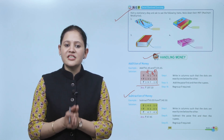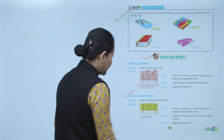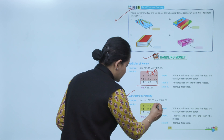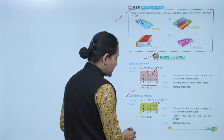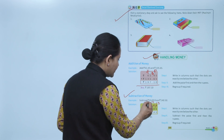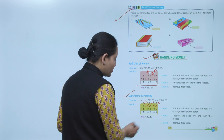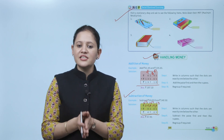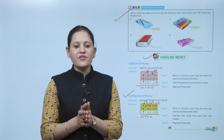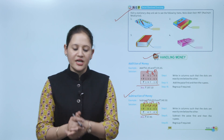Next is subtraction of money. Subtract rupees 93.05 from rupees 140.50. Starting from paisa: 10 minus 5 is 5; 4 minus 0 is 4; put the decimal; 10 minus 3 is 7; 13 minus 9 is 4. So the answer is rupees 47.45. Steps: write in columns with dots exactly one below the other, subtract paisa first then rupees, regroup if required.